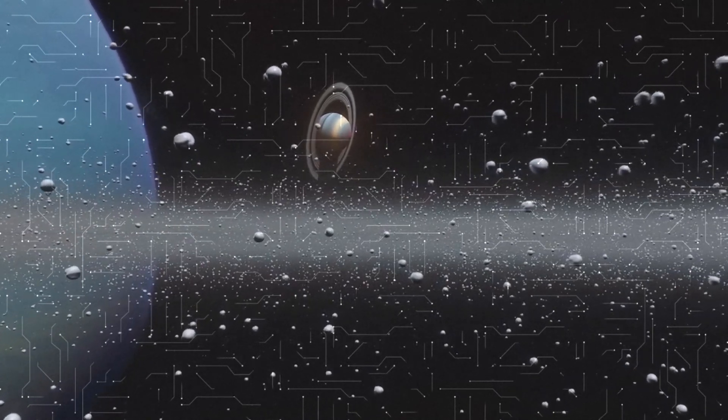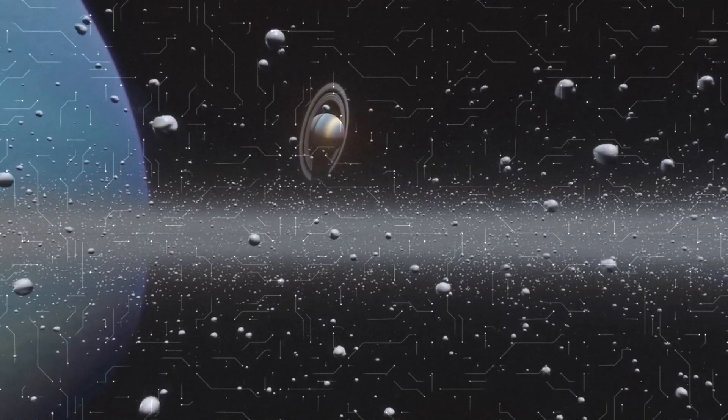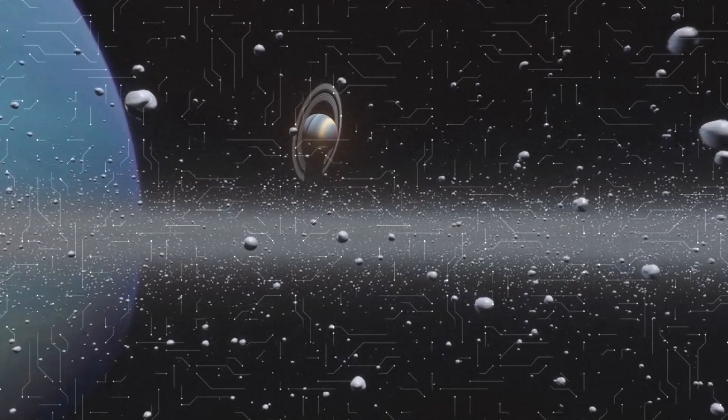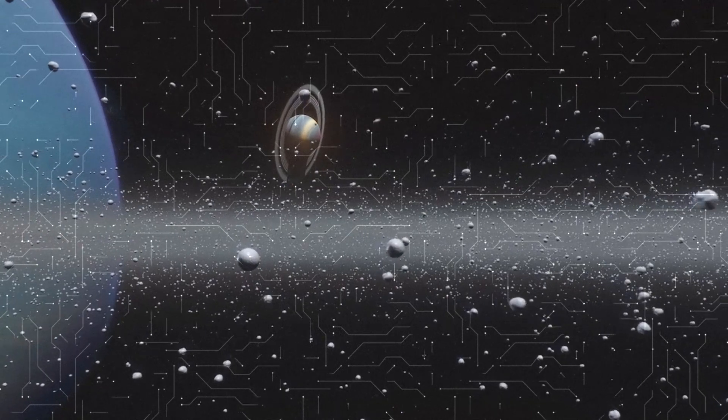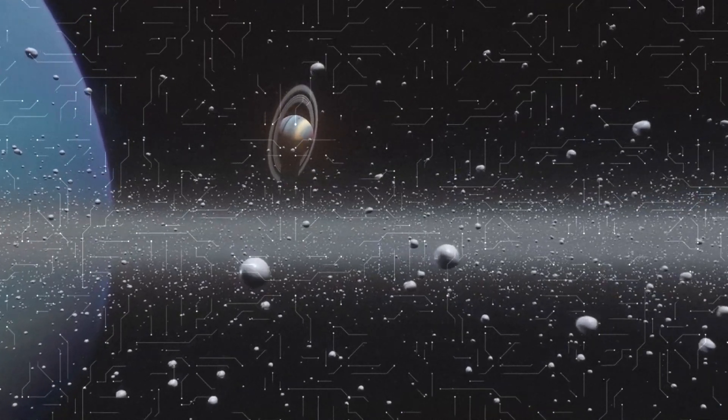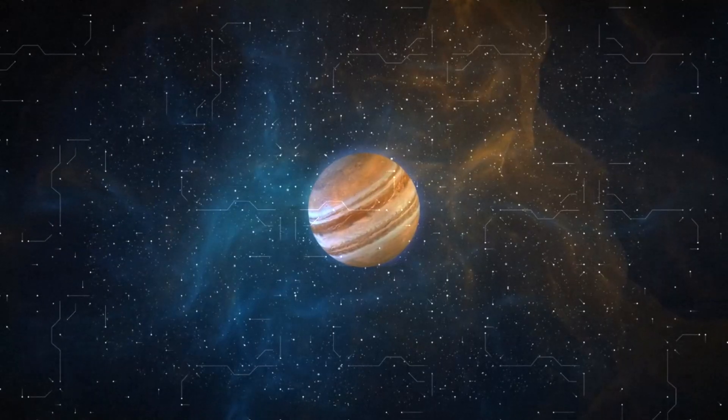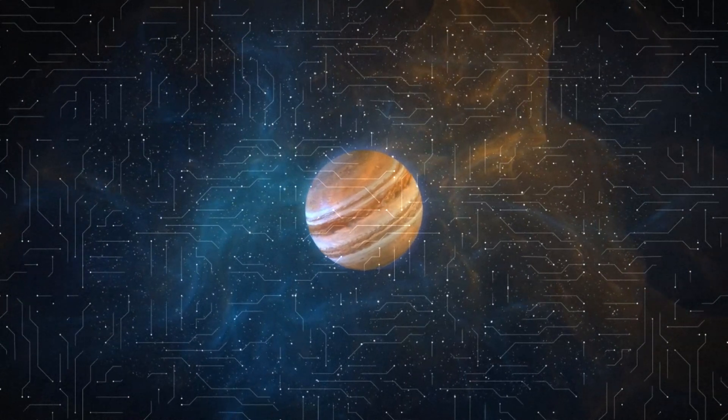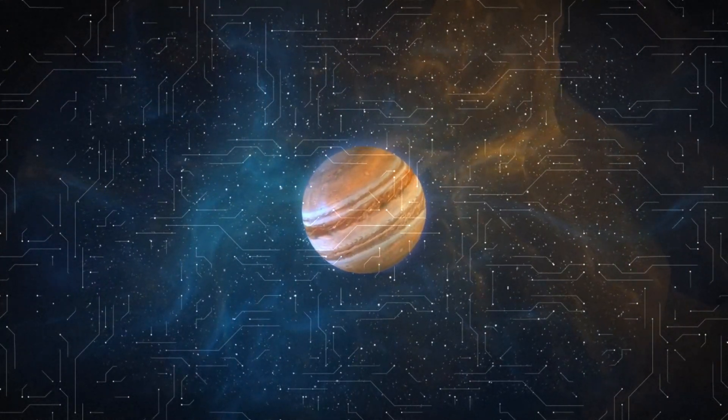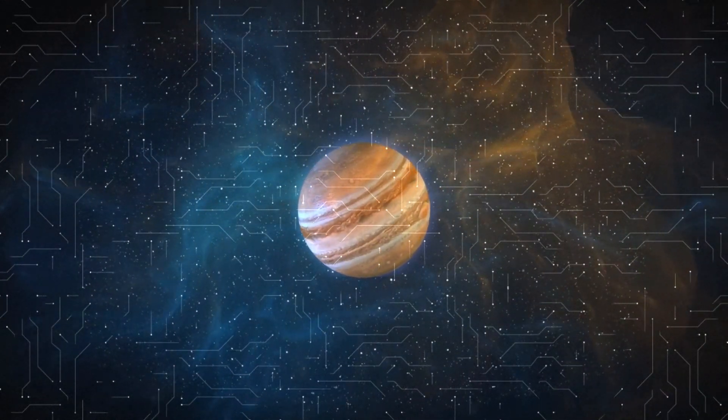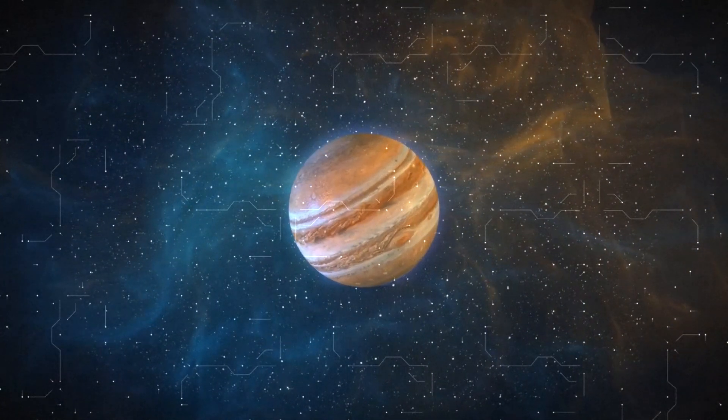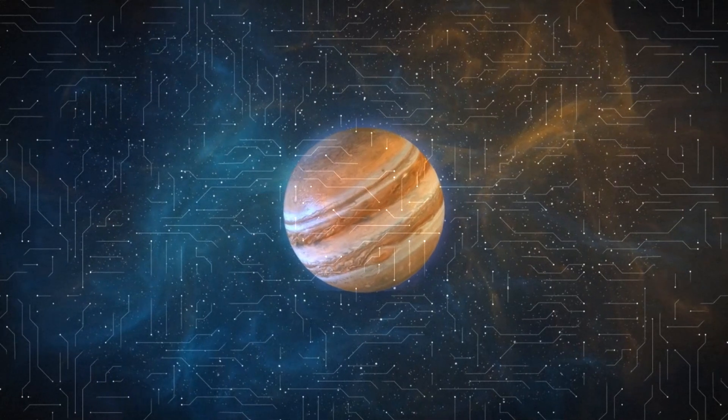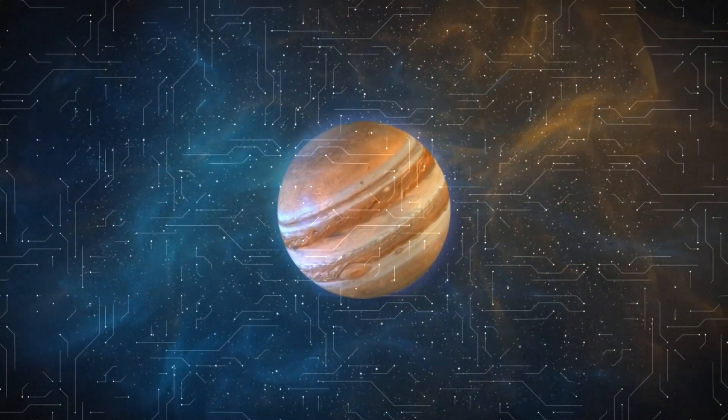6. Saturn. Saturn is the sixth planet from the Sun and has a famous ring system made up of ice and rock materials. The planet itself is composed of gases, predominantly hydrogen and helium, similar to Jupiter. The distance from Saturn to the Sun is about 1.4 billion kilometers. Fun fact, Saturn has many moons, but the most famous of them is Titan, which has an atmosphere and liquid lakes on its surface.